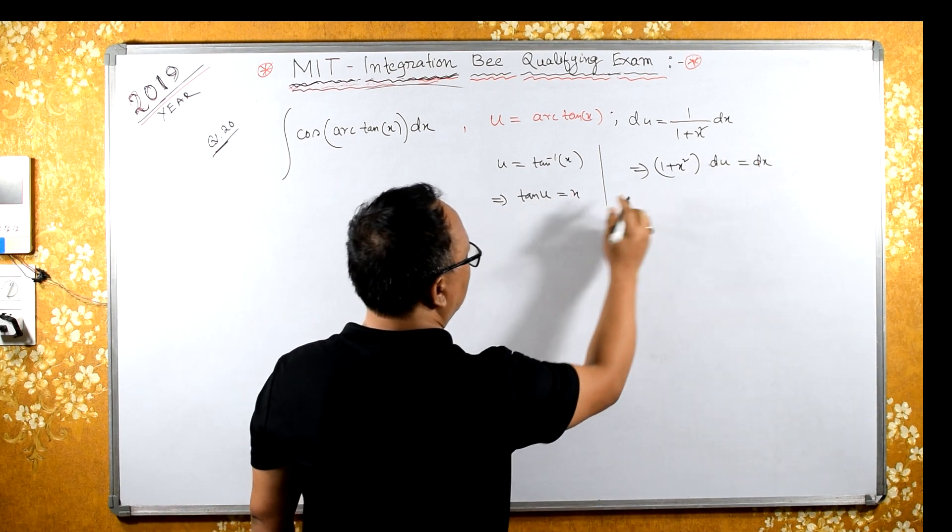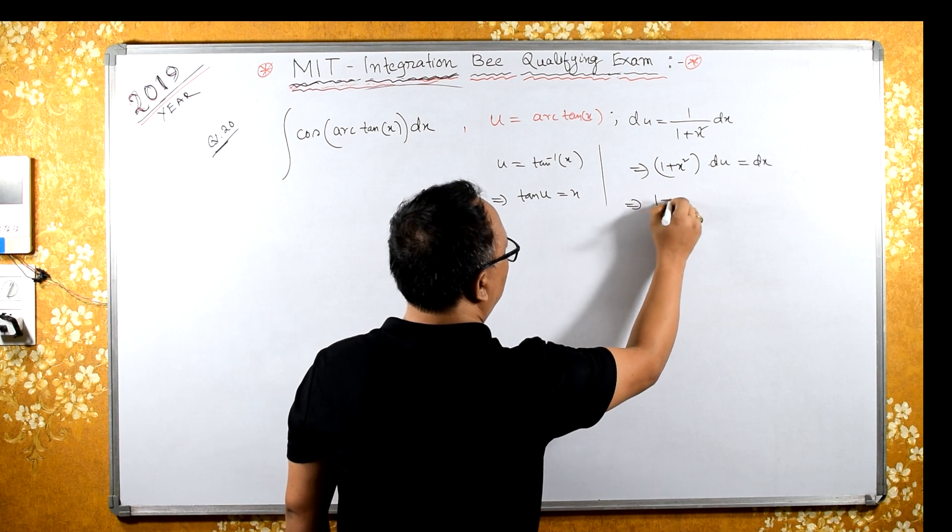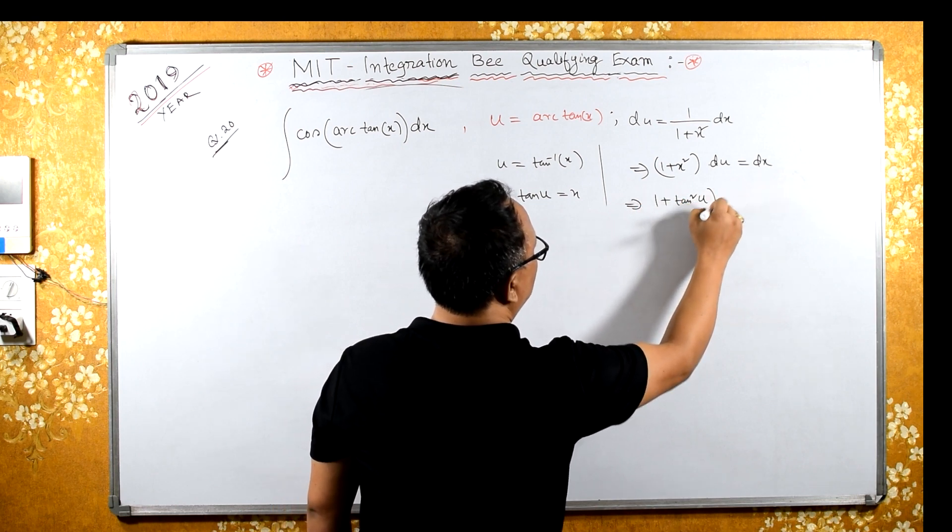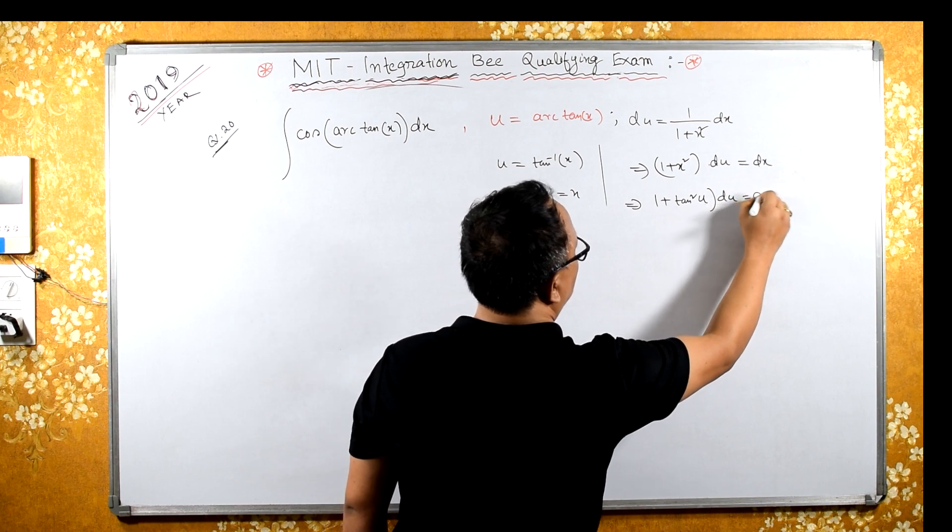Now what is x? X is tan u. This implies 1 plus tan squared u du equals to dx.